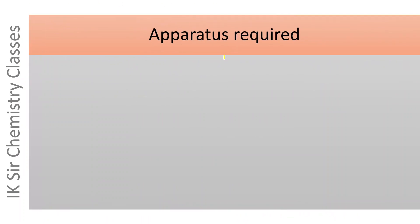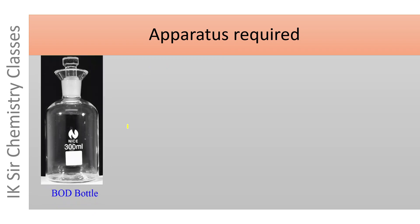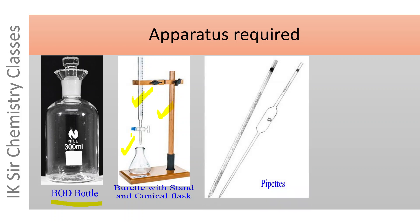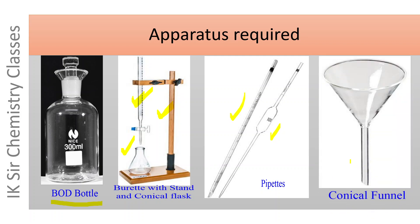Now let us see the apparatus required in Winkler's method. This is a BOD bottle — biological oxygen demand bottle — with a capacity of 300 ml. A burette and a stand with a conical flask are essential during any titration process. We will also require pipettes of different sizes: a 100 ml pipette and a micro pipette. A conical flask is used to transfer hypo solution into the burette.